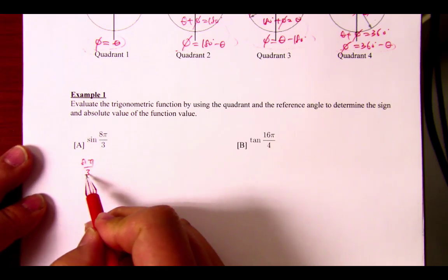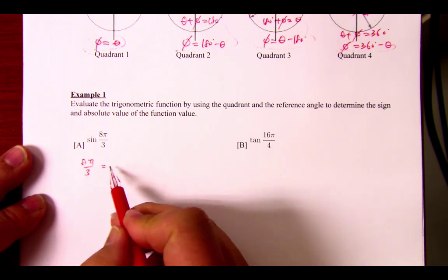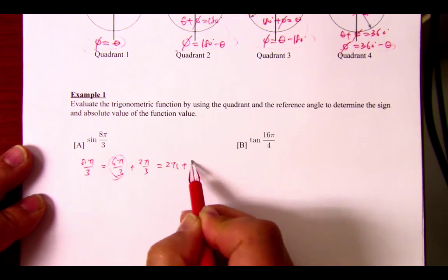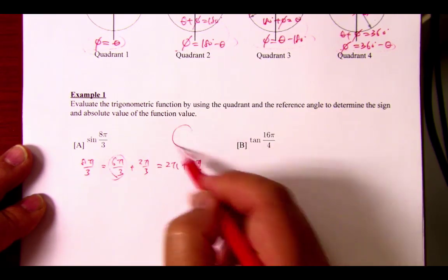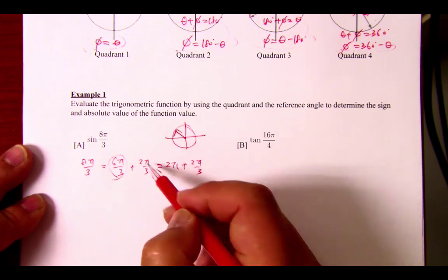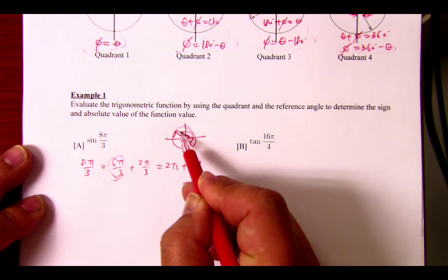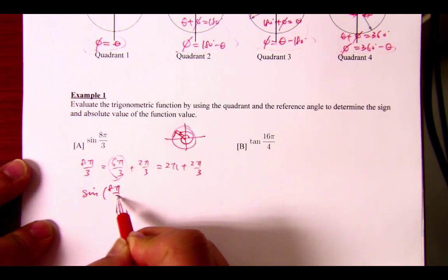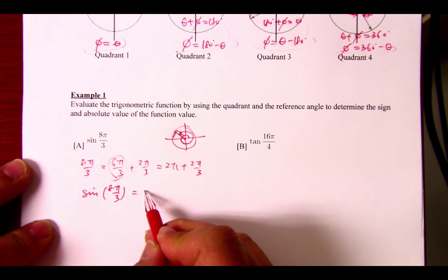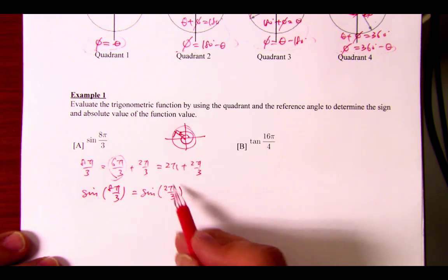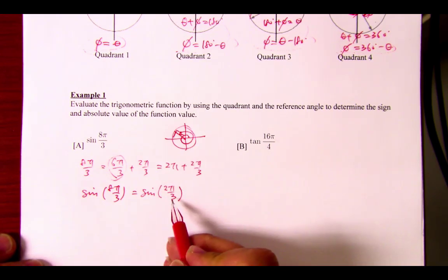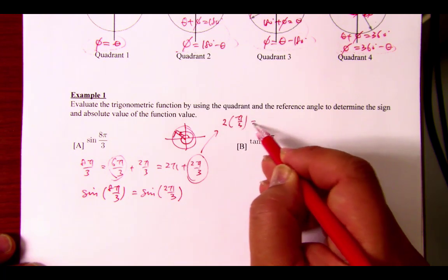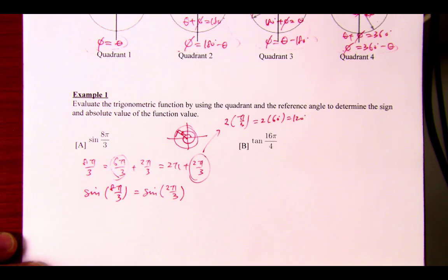Evaluate trigonometric function by using the quadrant and the reference angle to determine the sign and absolute value of the function value. Let's examine the angle first: 8π over 3. 3 goes into that twice, so that looks like it should be 6π over 3 plus 2π over 3, which is 2π. So what this is telling me, this is 120 degrees. 8π over 3 is making a full turn and coming back this way.